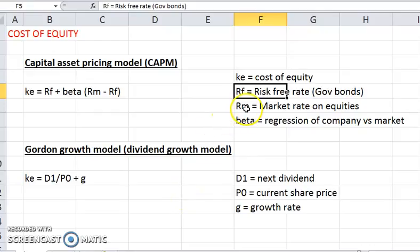So then the market rate would be the average required return on all equities listed in South Africa. So the market premium would be the market rate less the government bond rate.